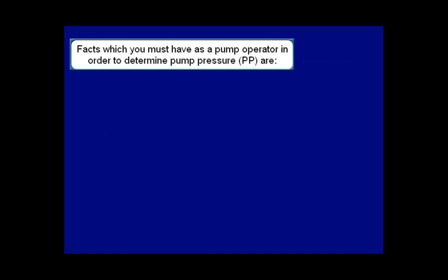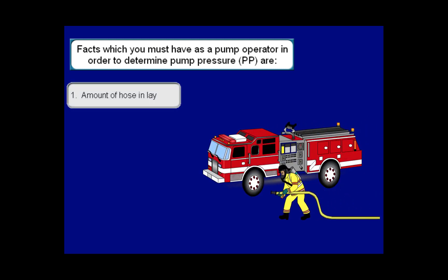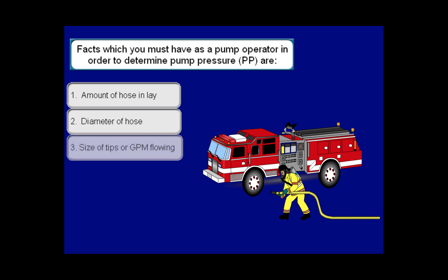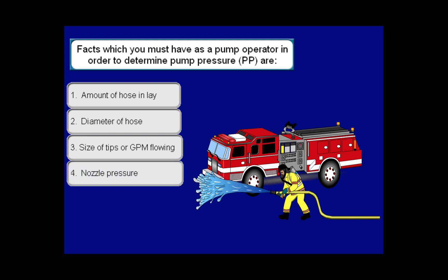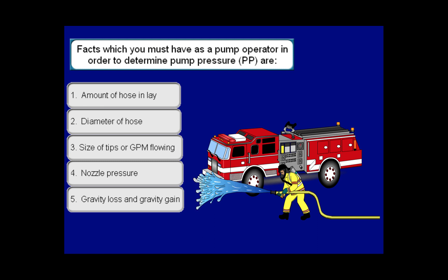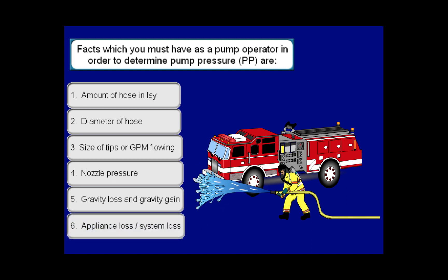Facts which you must have as a pump operator in order to determine pump pressure are: amount of hose in lay, diameter of hose, size of tips or GPM flowing, nozzle pressure, gravity loss and gravity gain, appliance loss and system loss.